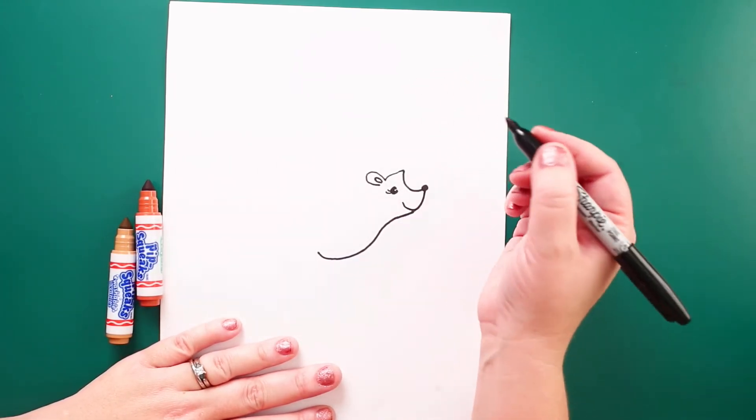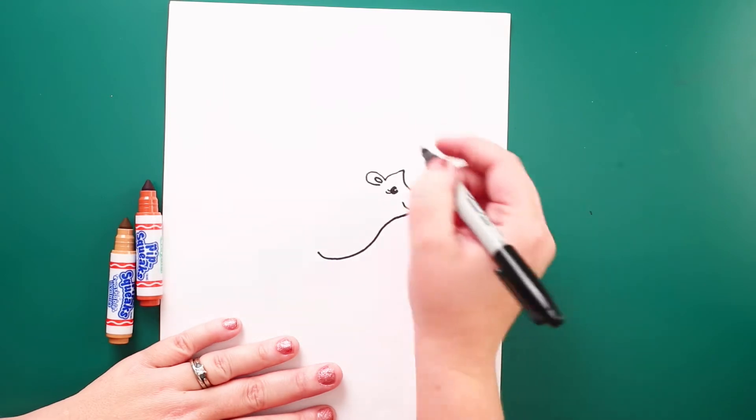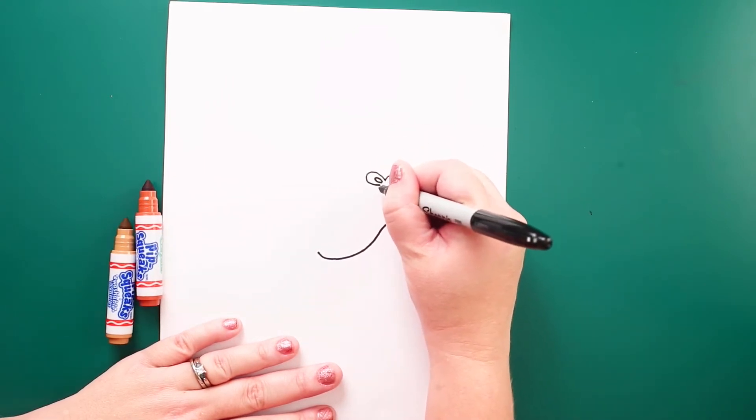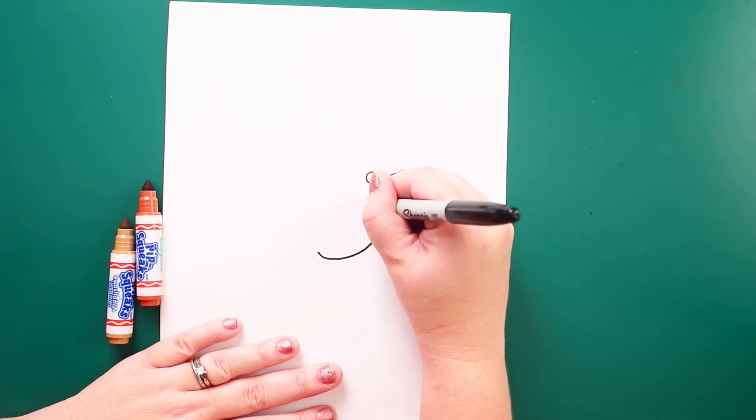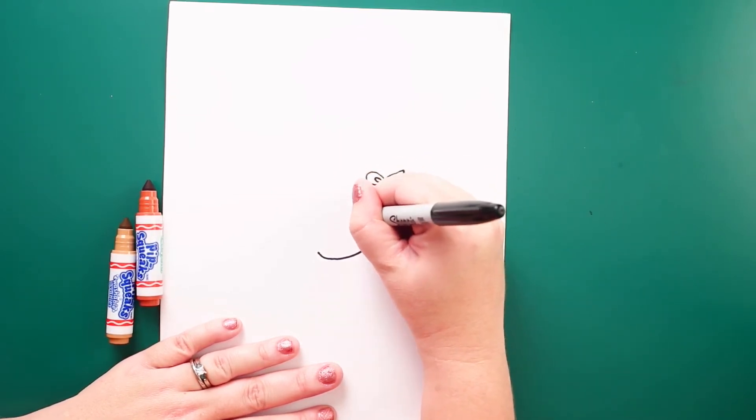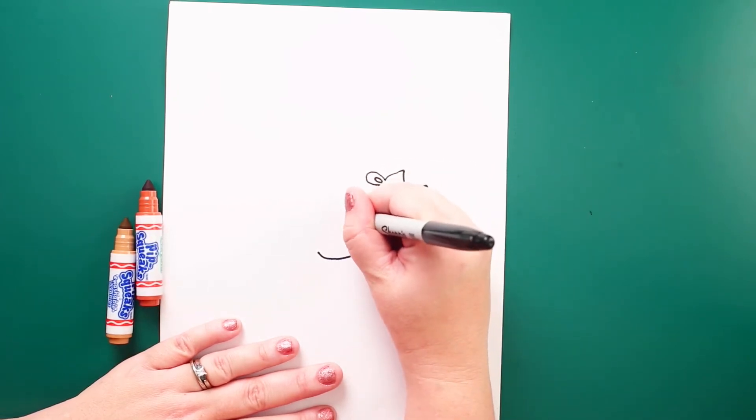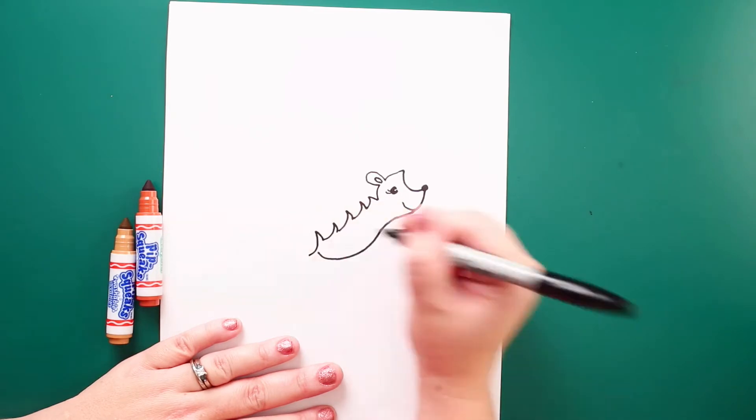And now I'm going to follow down from the ear across her body, some of the spiny textured little quills, comes down, down the body like that.